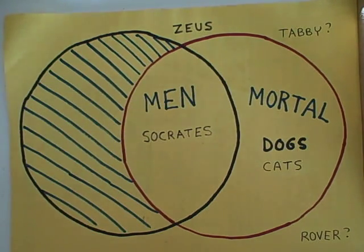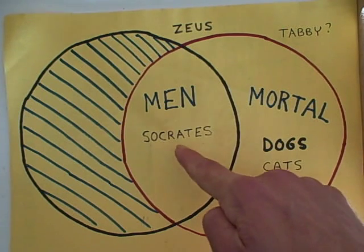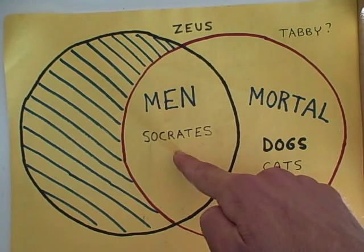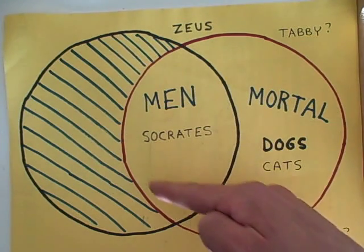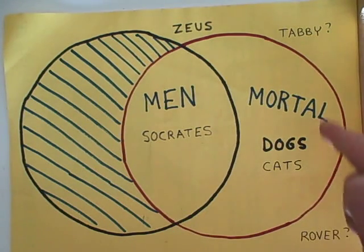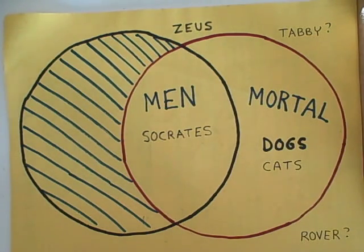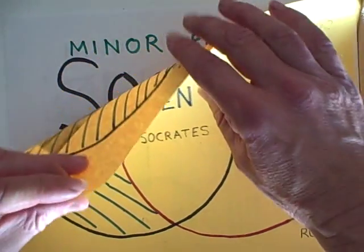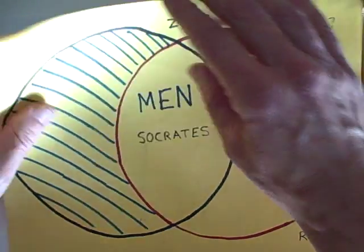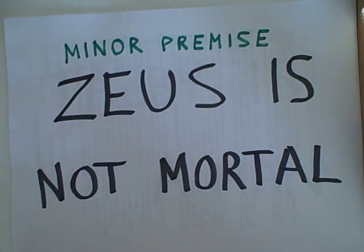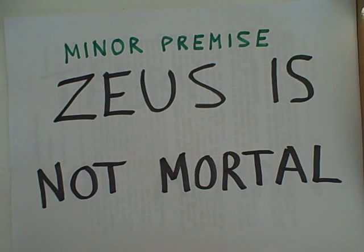So when we put Socrates in the section of men, we know that Socrates is also going to be in the larger circle of mortal things. That's how we would have the minor premise conclude that Socrates is mortal.